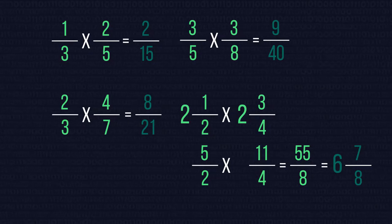To solve 2 and 1 half multiplied by 2 and 3 quarters we first need to convert to an improper fraction. So the question becomes 5 over 2 multiplied by 11 over 4. This gives us 55 over 8 which needs to be converted back to a mixed number 6 and 7 over 8.